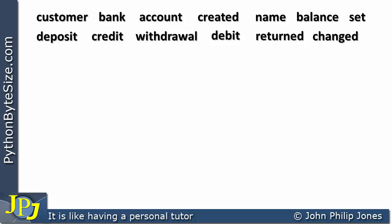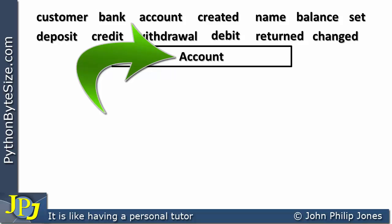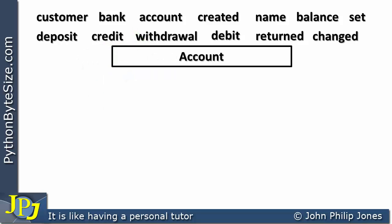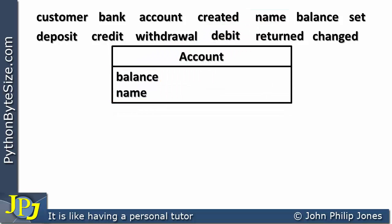Using my understanding of the specification and the words listed, I can now build my class diagram. The first word I'm interested in is 'account', and this is going to be the name of the class I'm building. The next thing to consider: what are the variables this class is going to require? What are the data fields?